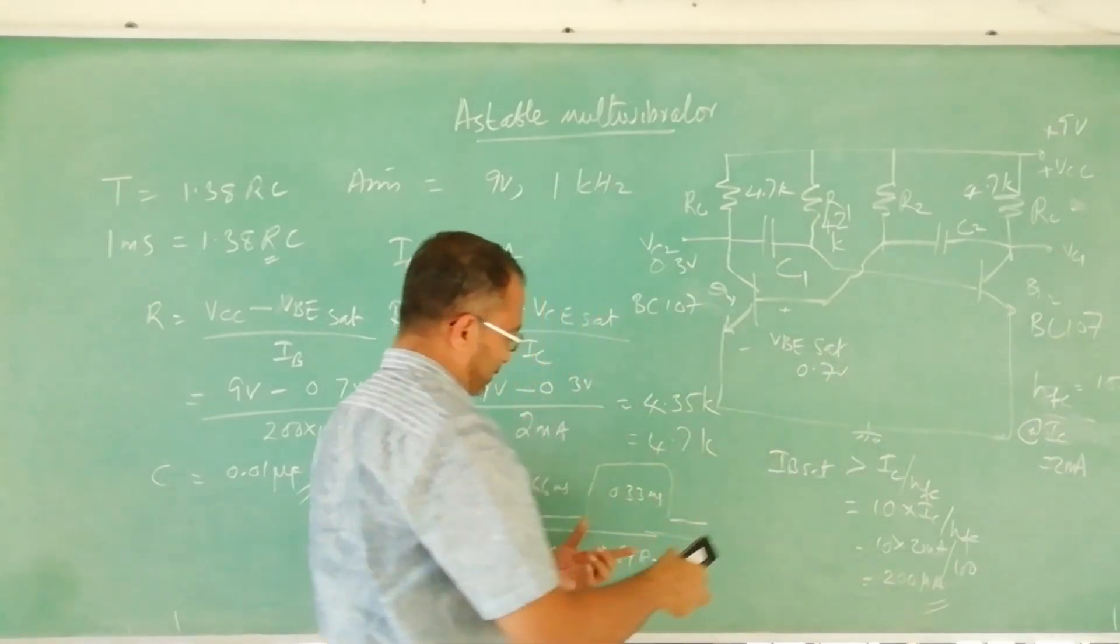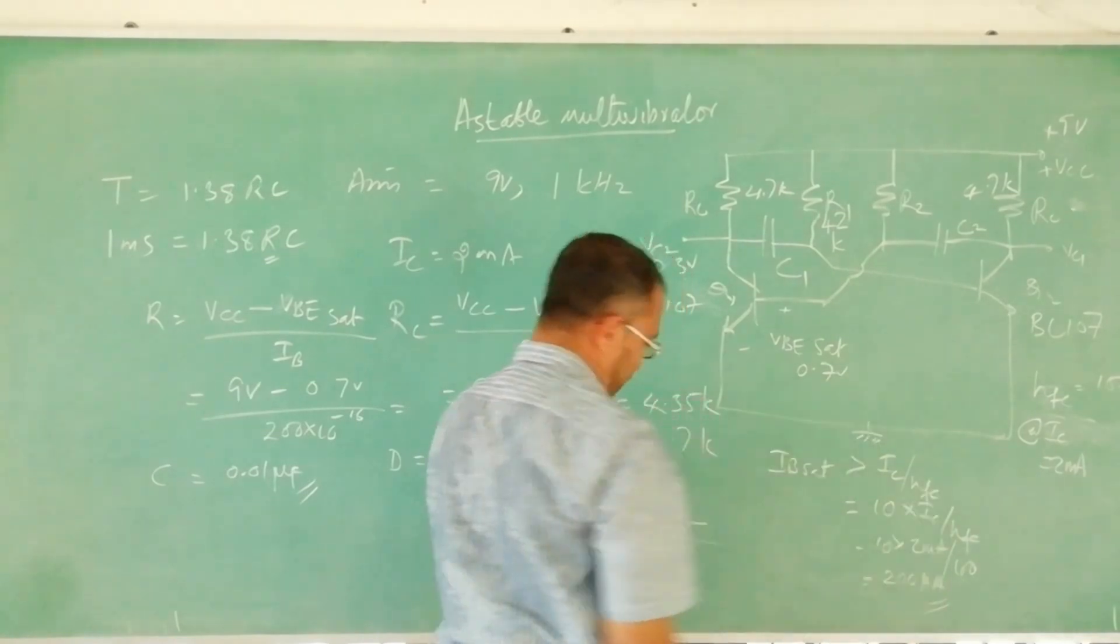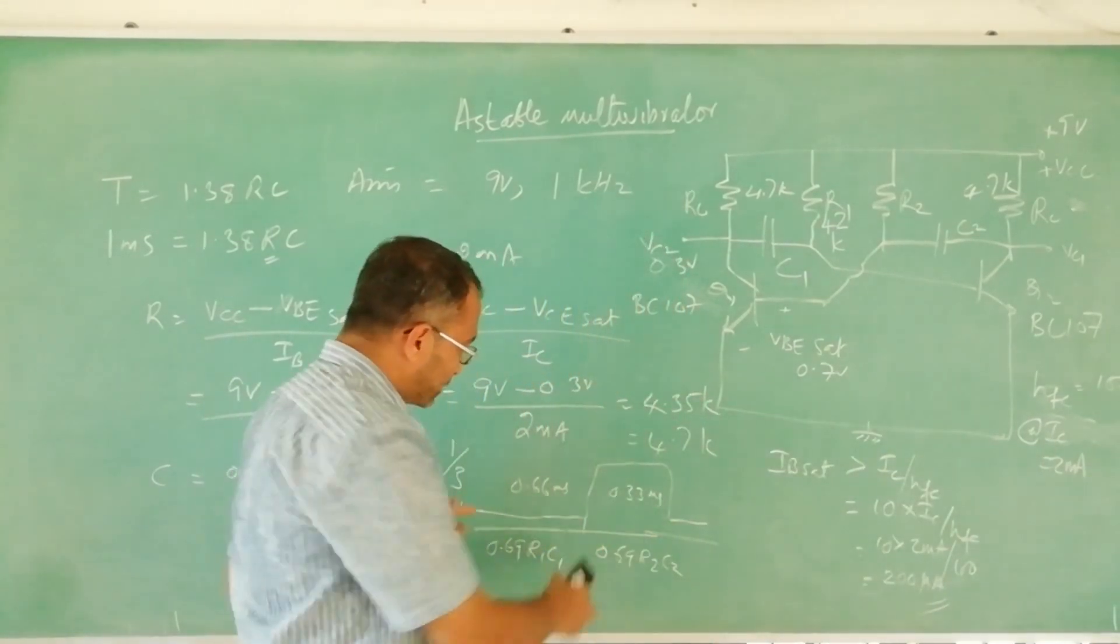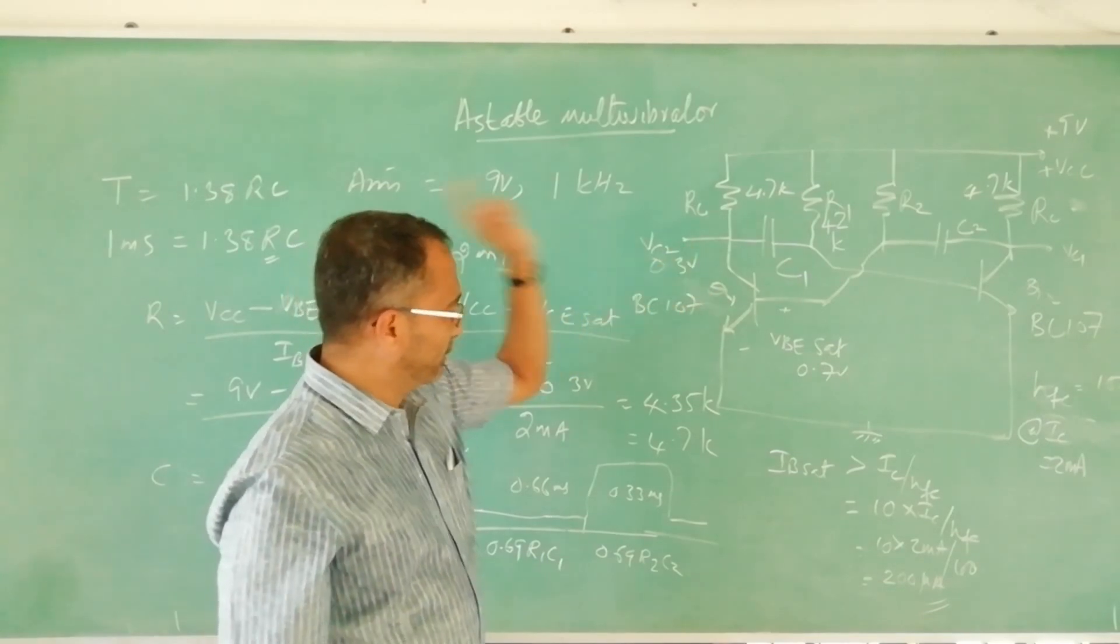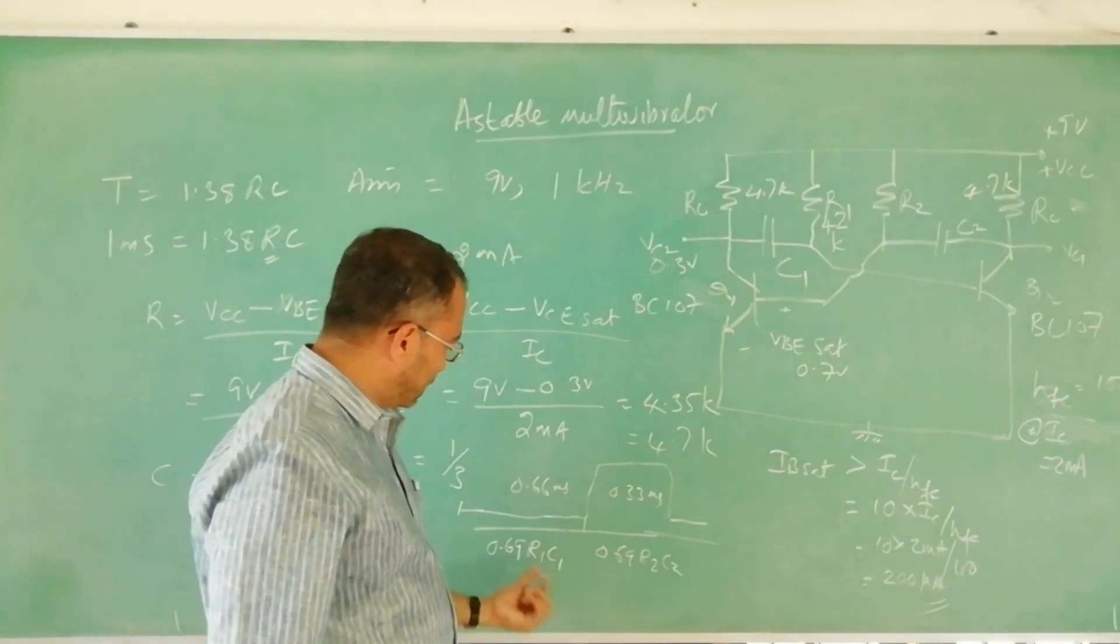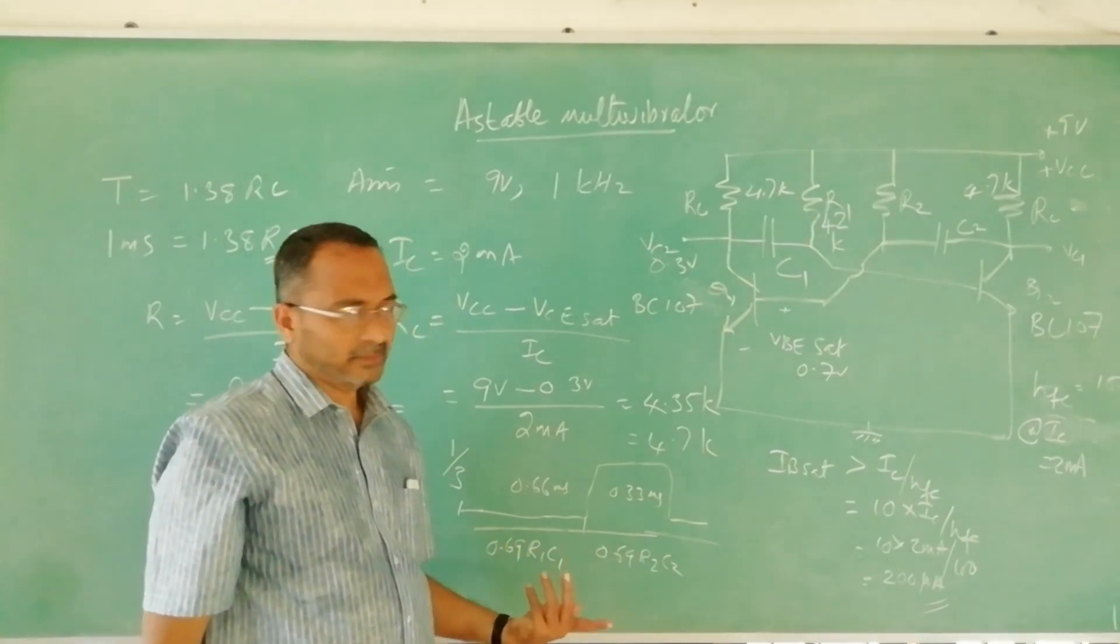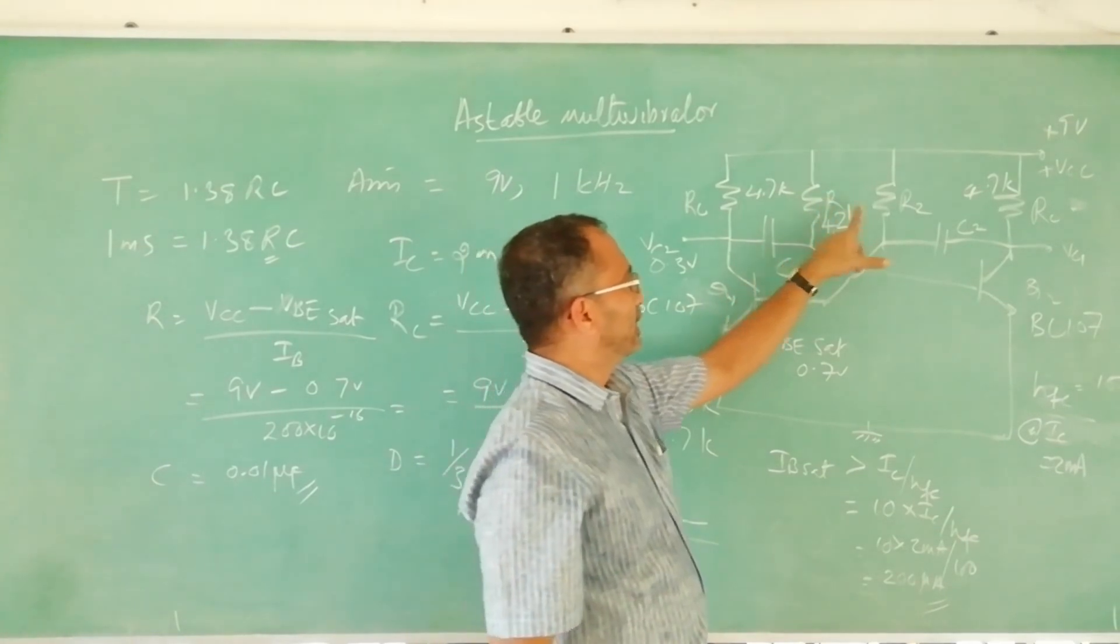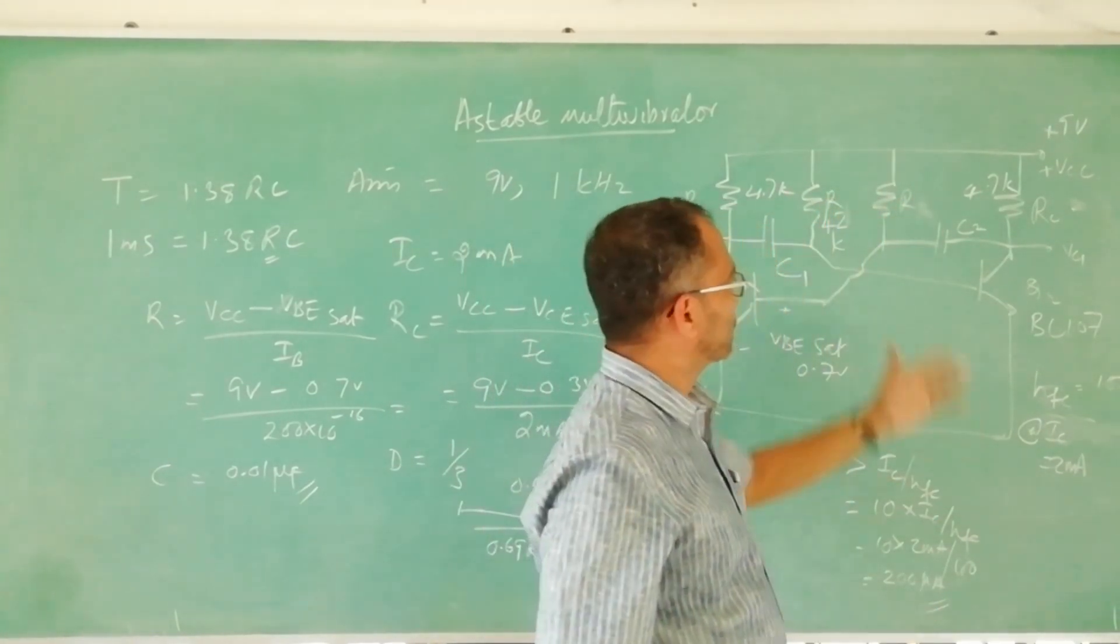In the opposite phase of the working, during this period that transistor will be on and during this period that transistor will be off. So now we decide to take the output from here then equate this with this. First we have obtained R1, let R1 and R2 same because first we select R1 R2.